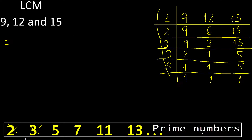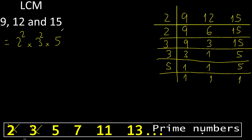Here: the prime factors are 2, 3, and 5. Factor 2 appears 2 times. Factor 3 appears 2 times. Factor 5 appears 1 time. 2 multiplied 2 times is 4. 3 multiplied 2 times: 3 multiplied by 3 is 9.